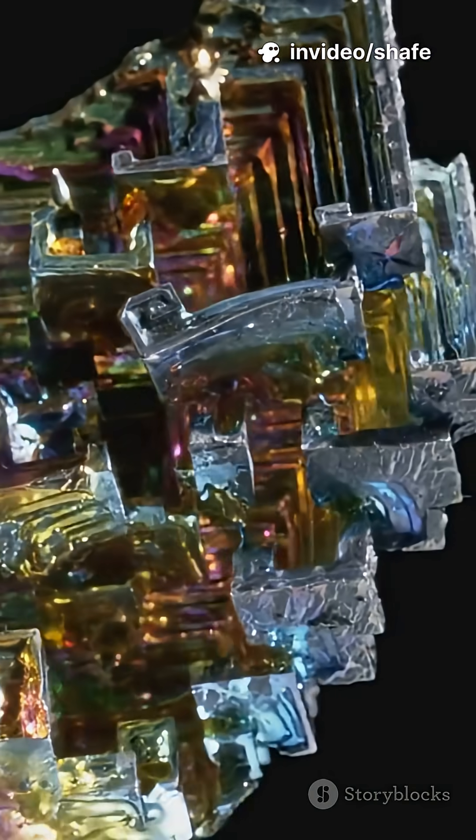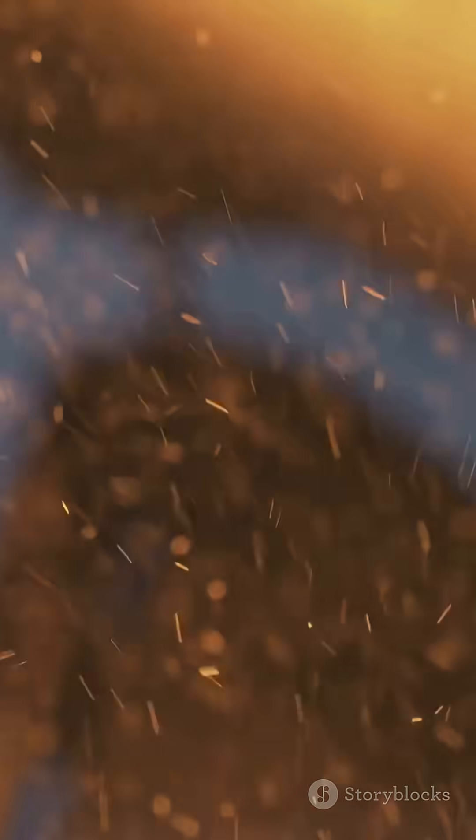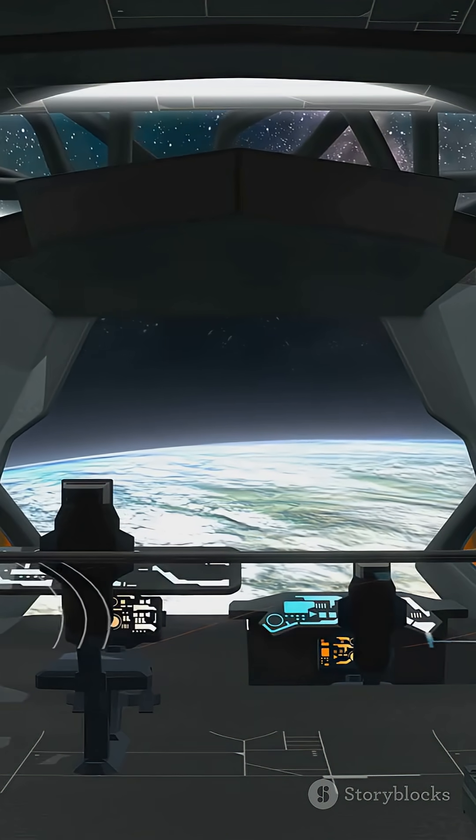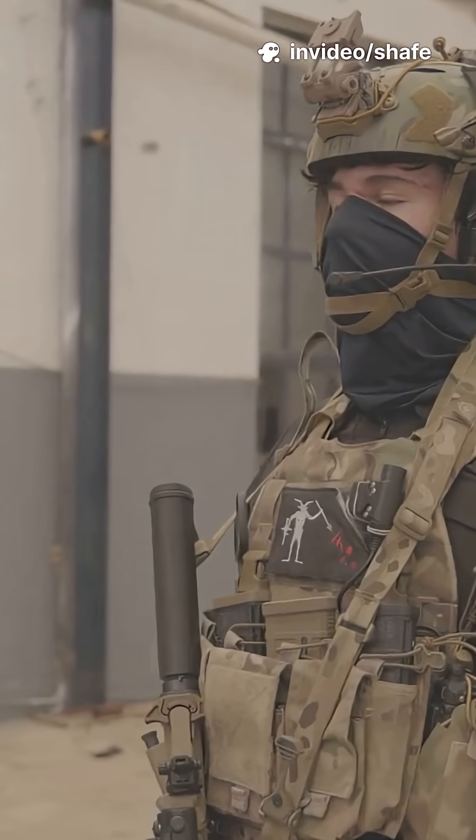But wait, it gets crazier. Scientists are also looking at materials made from boron nitride, or even mixing metals and ceramics at the nanoscale. These supercomposites could be used for everything from building spaceships to making body armor lighter and more protective.